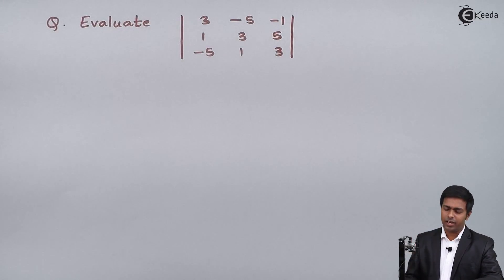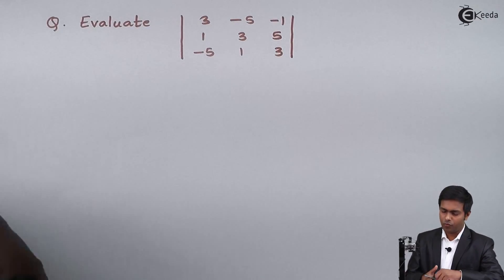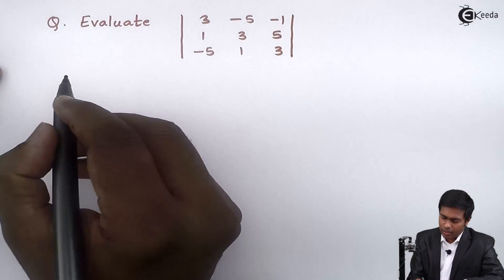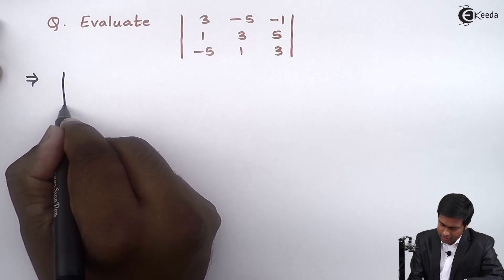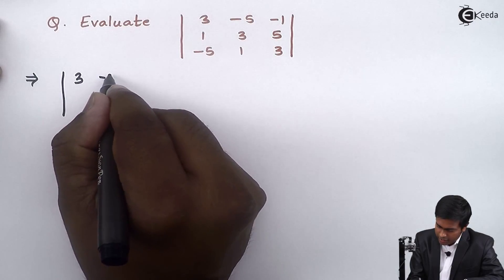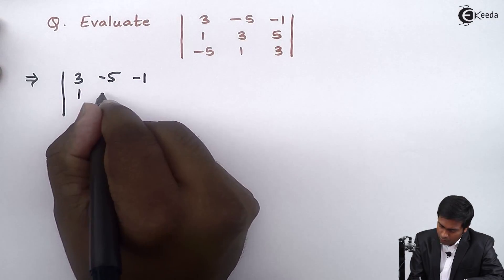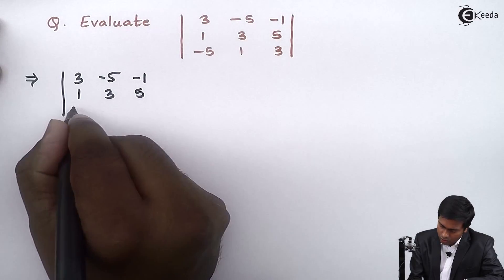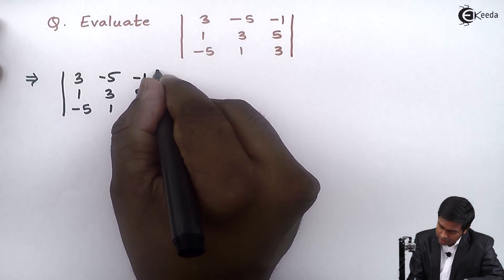Hello friends. In this problem we have to evaluate a determinant of order 3 by 3. So let's start. I'll write down the determinant: the first row is 3, -5, -1; the second row is 1, 3, 5; and the third row is -5, 1, 3.